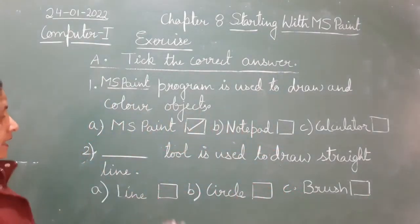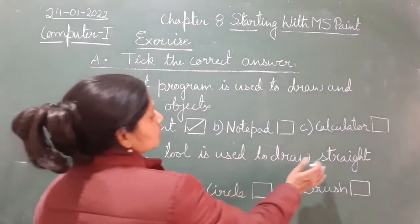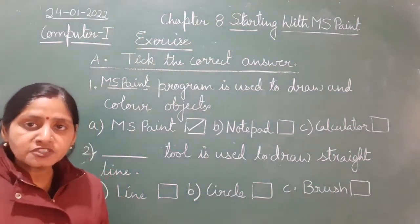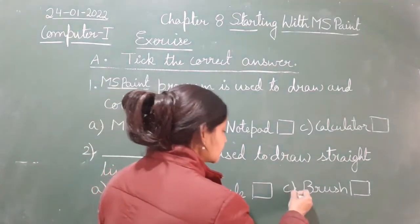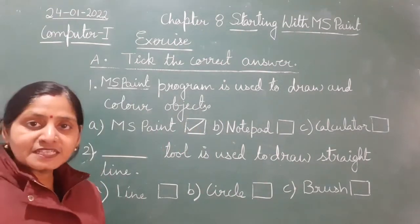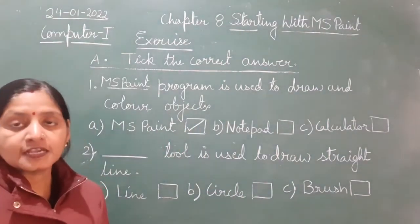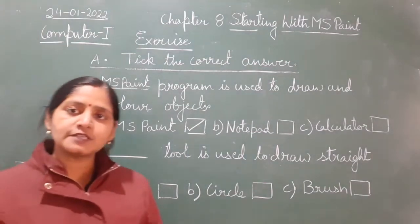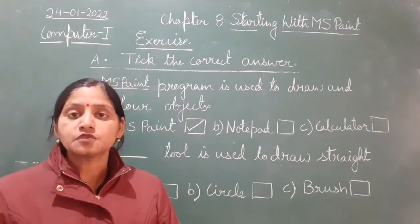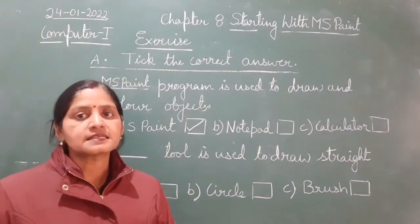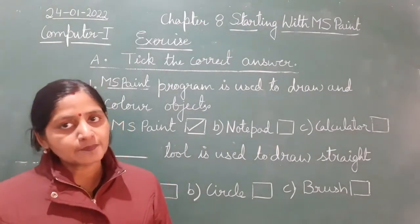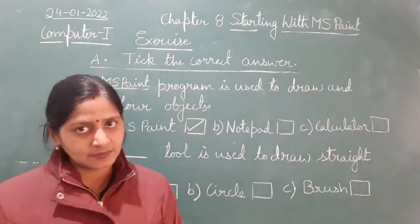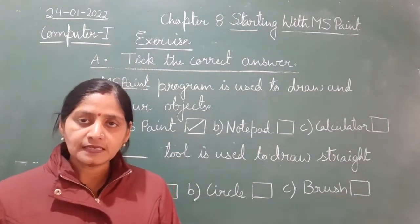Let us understand the question. In MS Paint, we use some objects or shapes to draw figures. All those objects which we use for drawing — like pencil, eraser, scale, compass — we use them to make drawings on paper. Those same things are available in MS Paint as well. There we also need these things to draw and color. We have brush, colors, and shapes.